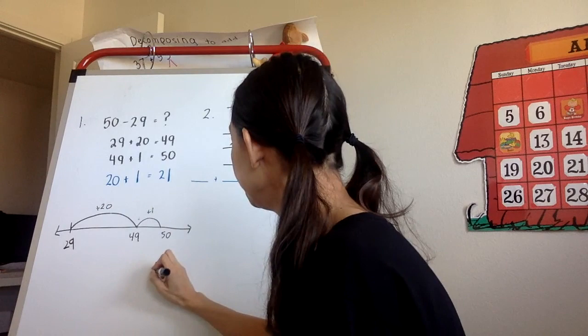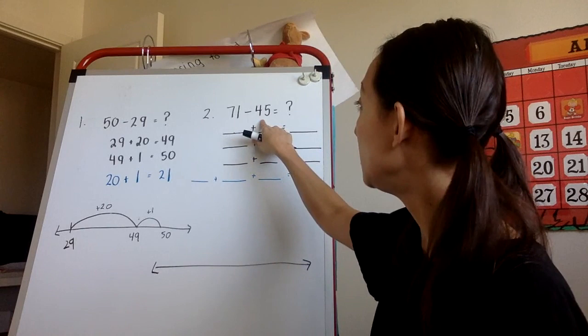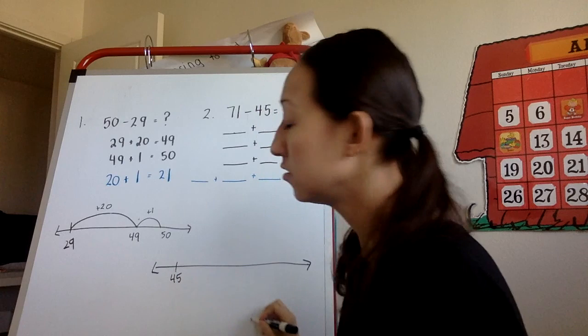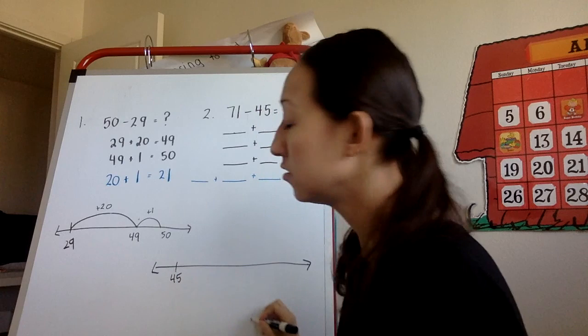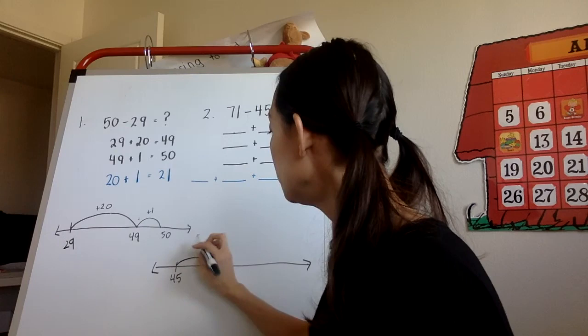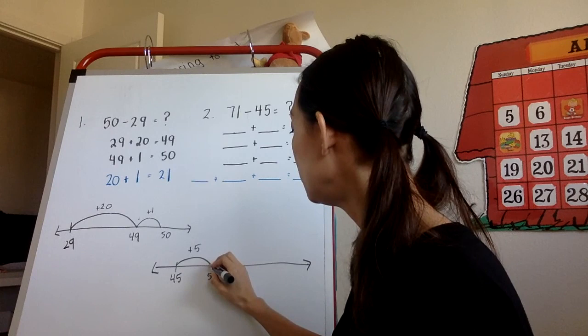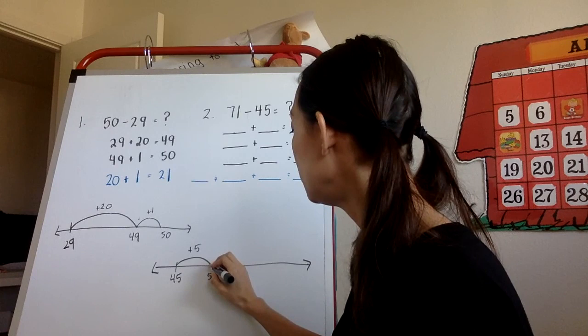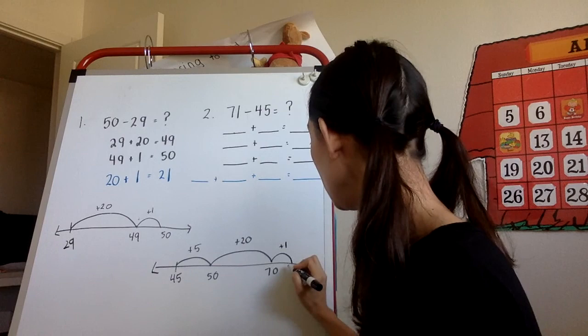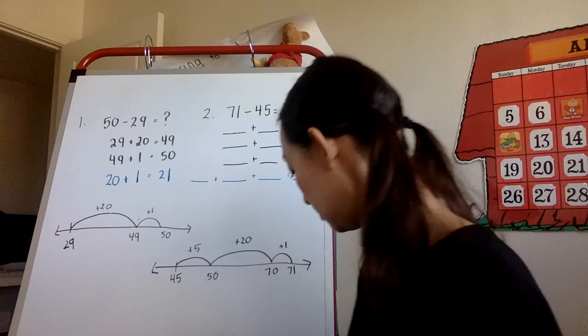Here's another example. We have 71 minus 45 today. We're going to use a count up strategy. So that means I'm going to start at 45, and I have to stop at 71. I'm going to do it in manageable jumps for me. First, I'm going to plus five. Because if I get to 50, it'll be very easy for me to continue adding more. So 45 plus five is 50. And then from 50, I'm going to jump all the way to 70. And then from 70, all I have to do is add one more. So my answer is not where I landed. My answer is in the jumps.